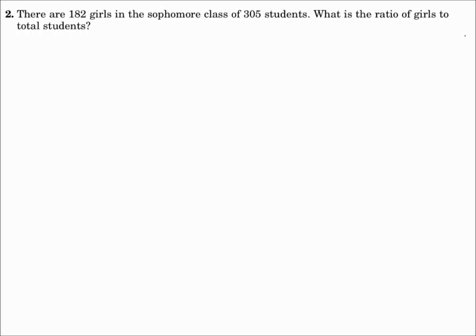Number two. There are 182 girls in the sophomore class of 305 students. What is the ratio of girls to total students? Well, there's 182 girls and there's 305 total students. So 182 to 305.